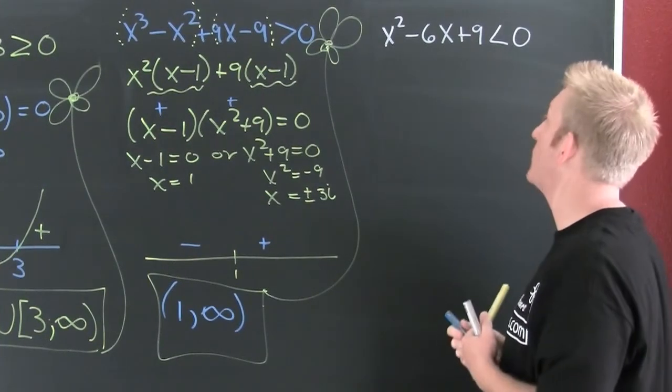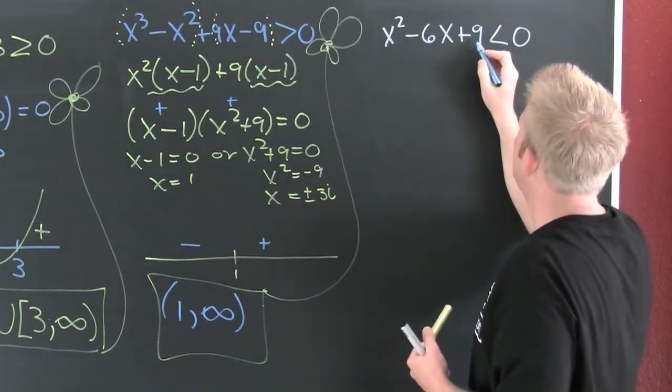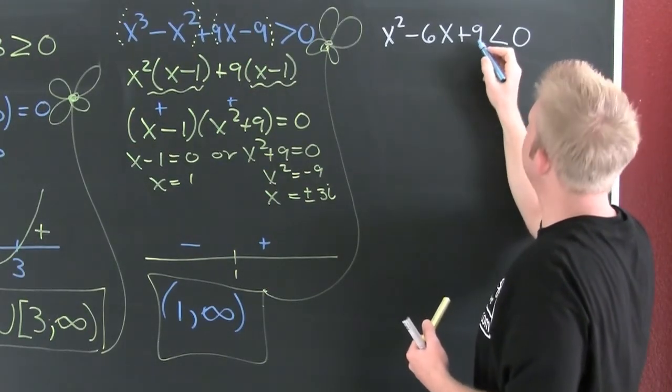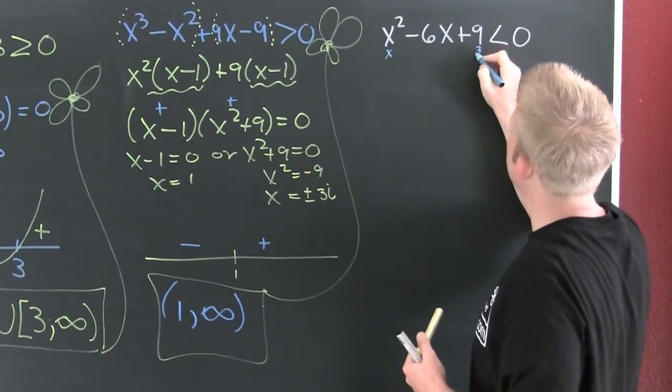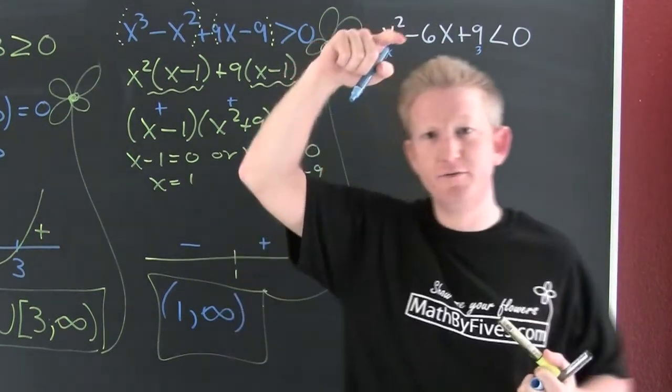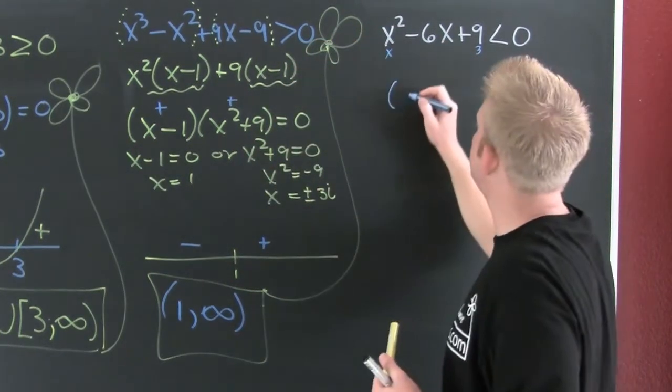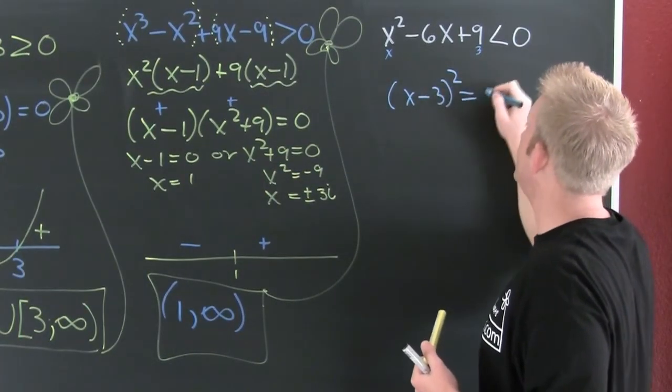I need to factor, so I factor. Is this a square of something? X. Is this a square of something? Three. This one times that one, double it, is it six? It's a perfect square. So I have x minus three squared, that's going to be equal to zero.